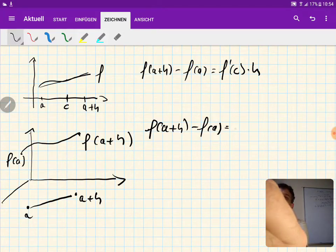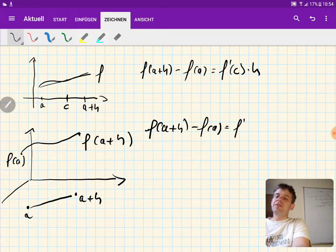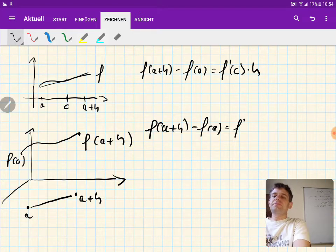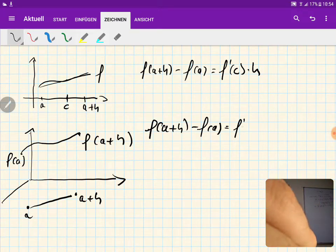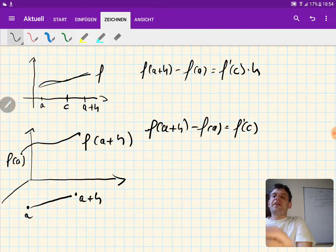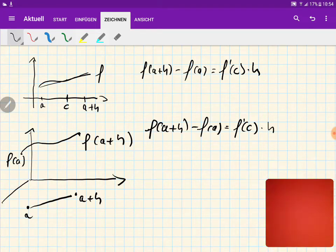is equal to the derivative of f at some point between a and a plus h. Note that h of course is also a vector in this case, not just a number. This is a vector that lies in the xy plane in our case. So the derivative of f at some point c—c is gonna get another name soon—times h.